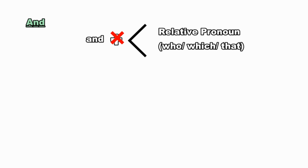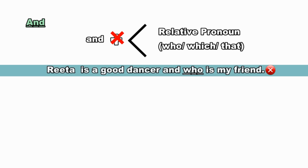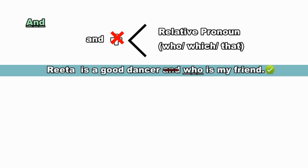Now let's look at the conjunction 'and'. You know that 'and' is used to join two sentences or words. I will now discuss where 'and' should not be used. Before a relative pronoun, the conjunction 'and' is never used — that is, before relative pronouns like who, which, that, etc., using 'and' is incorrect.